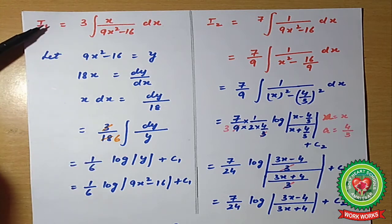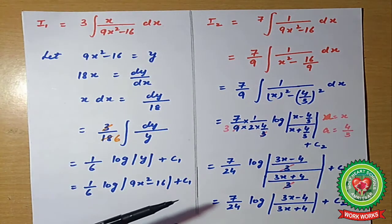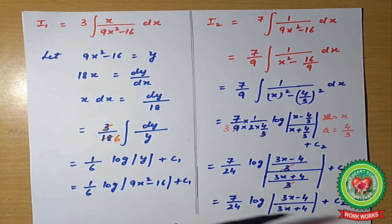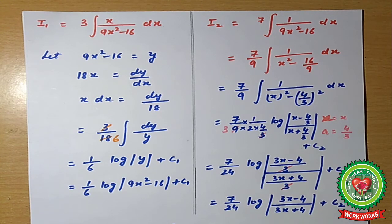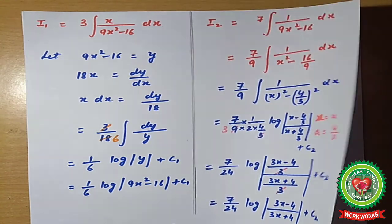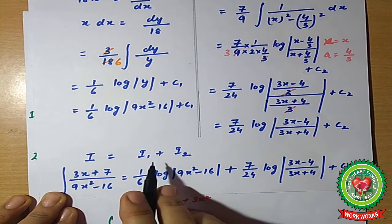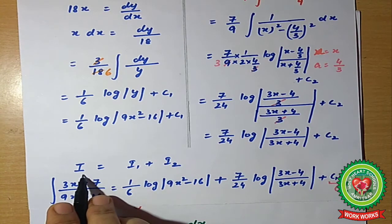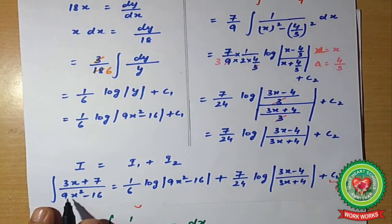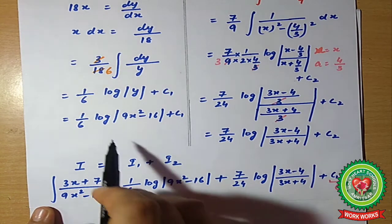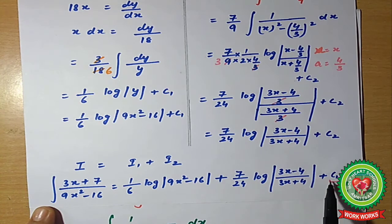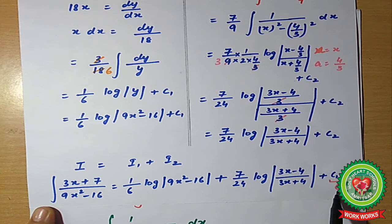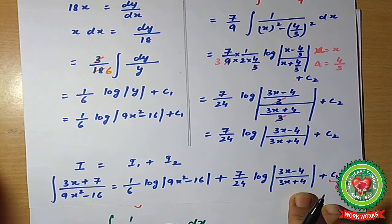Since we are solving two integrals I1 and I2, we use constants C1 and C2 separately. To find the full integration, we add the two integrals: I = I1 + I2. The final answer for ∫(3x + 7)/(9x² − 16) dx is the sum of the values of I1 and I2, with C1 + C2 = C as the constant of integration.